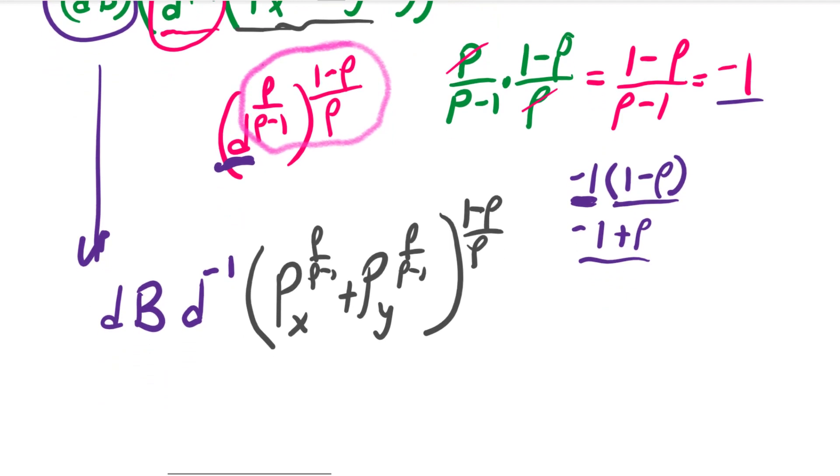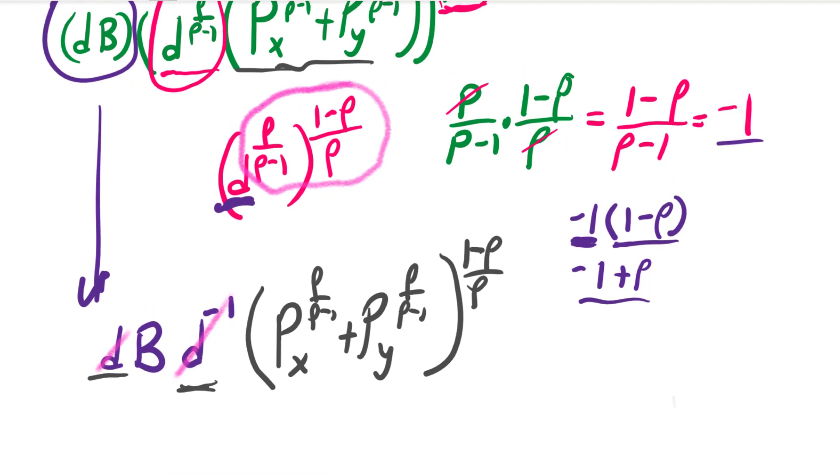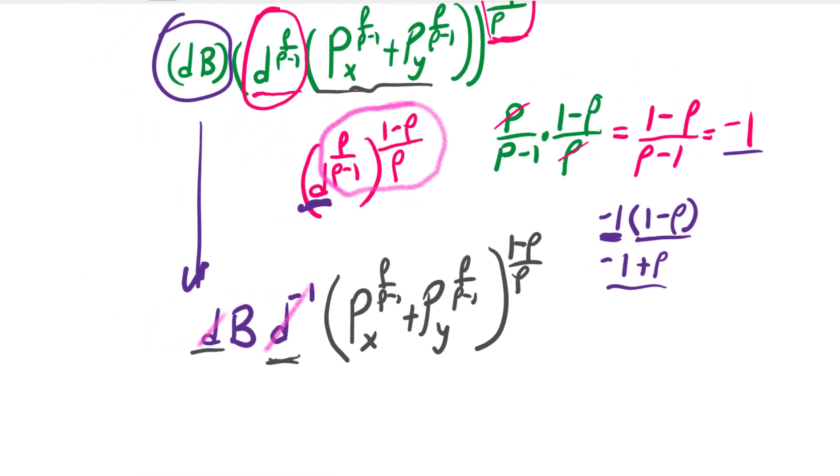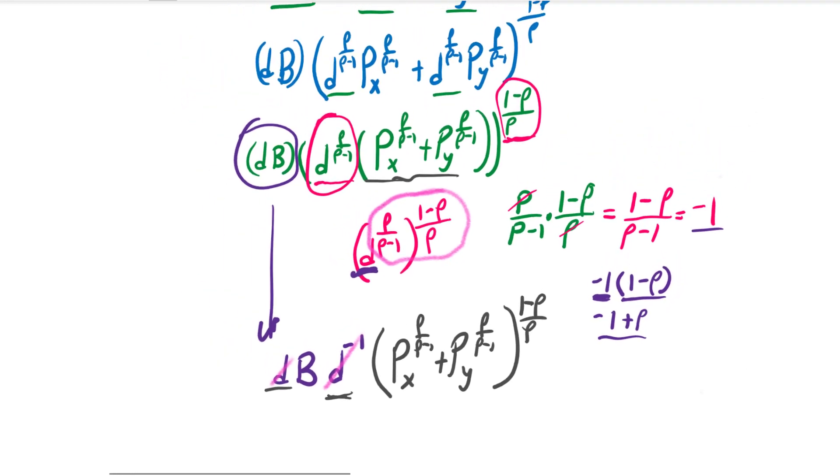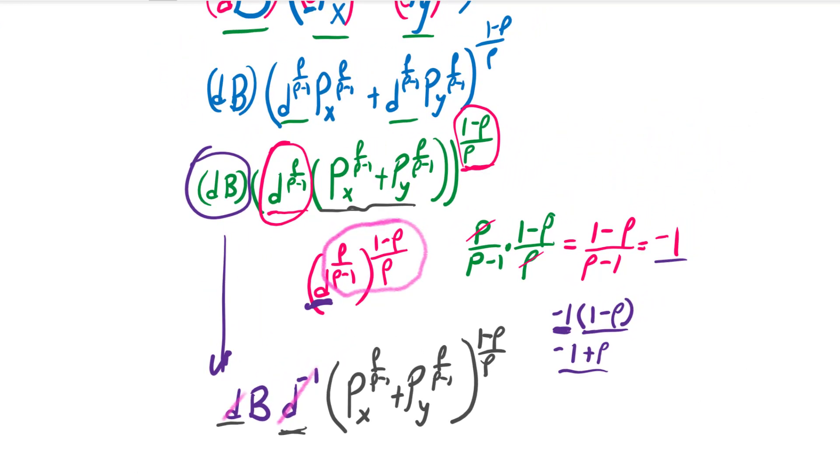And so of course this D and this D^(-1) power, those are going to cancel each other. And so this is how you can show that this indirect utility function is homogeneous of degree 0 in prices and budget. If you multiply both the prices and the budget by the same constant, it does not affect the result of the function at all.